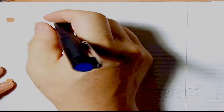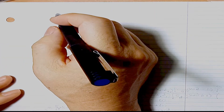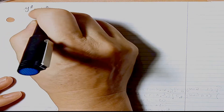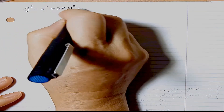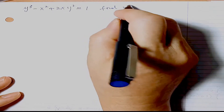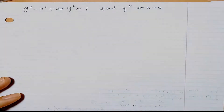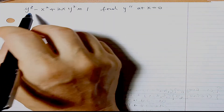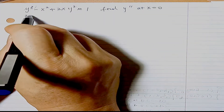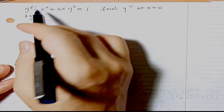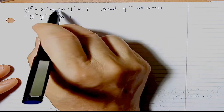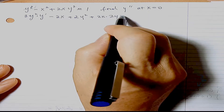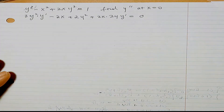Problem two: find the double derivative at x = 0 of y³ - x² + 2xy² = 1. We need to find y'' at x = 0. Using implicit differentiation: 3y²·y' - 2x + 2y² + 4xy·y' = 0. That's the first derivative equation.